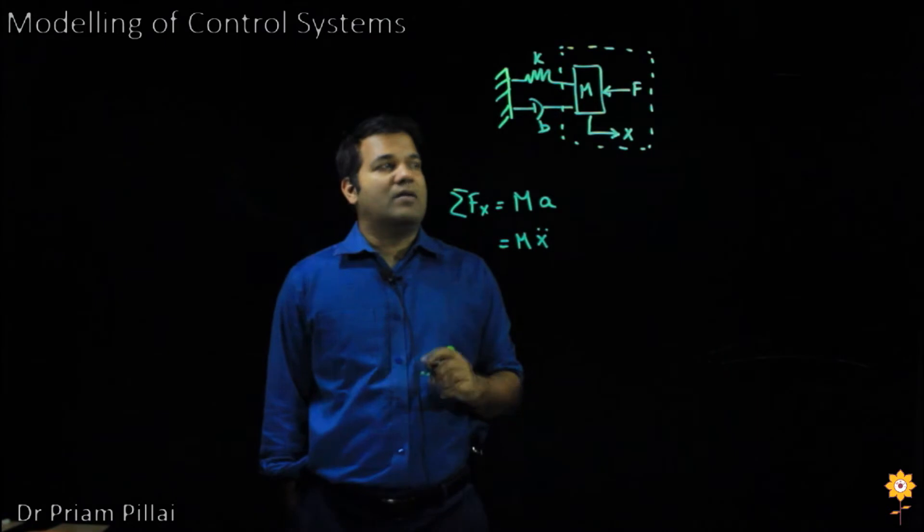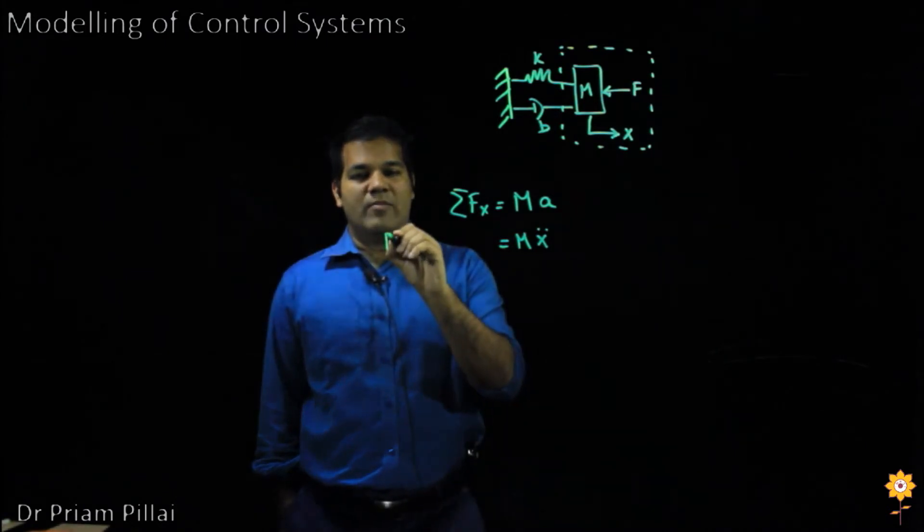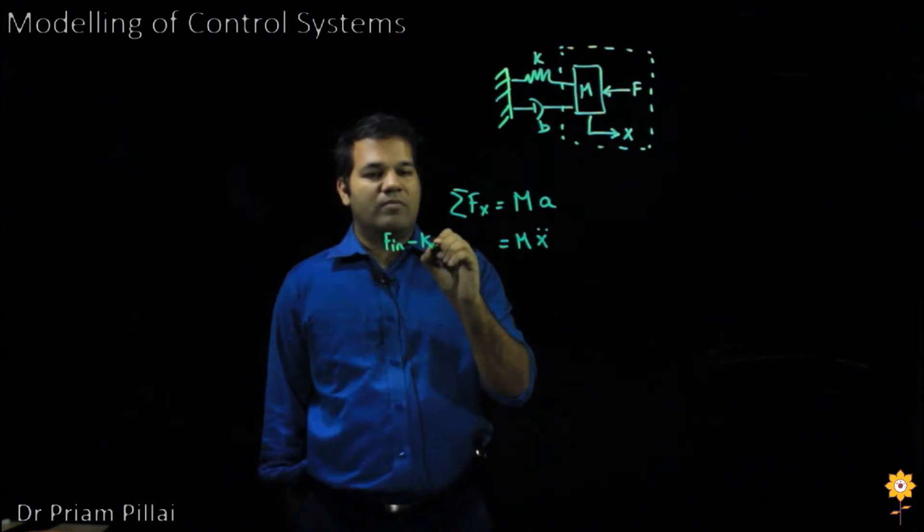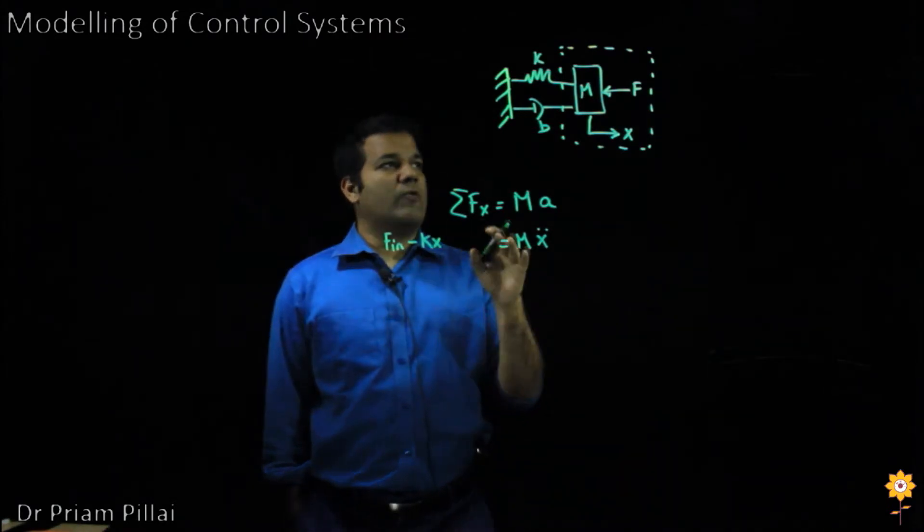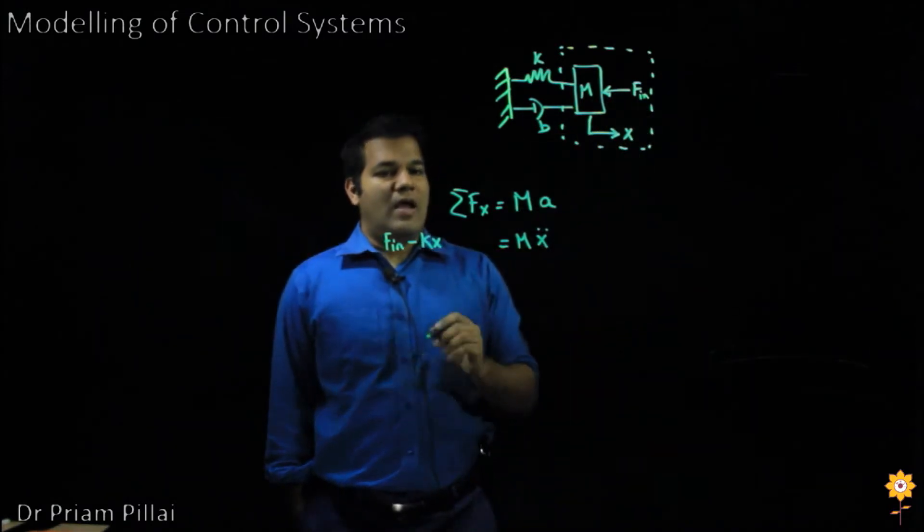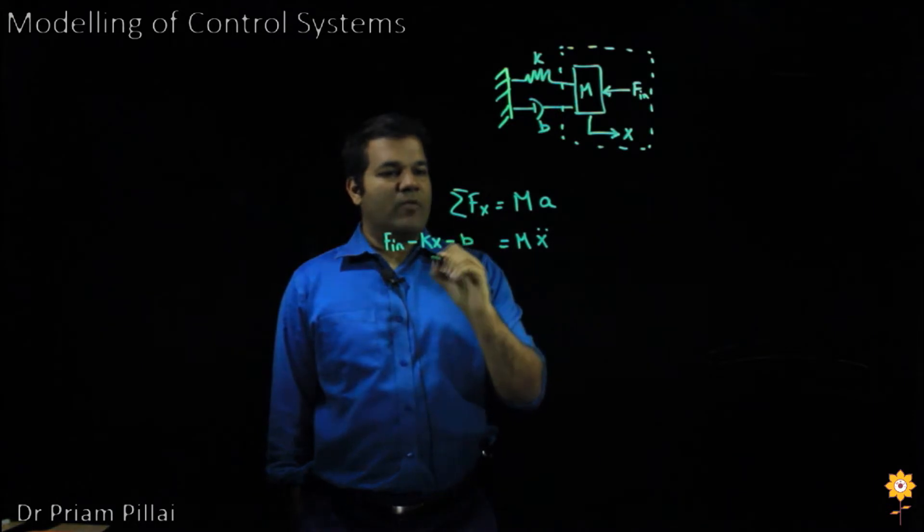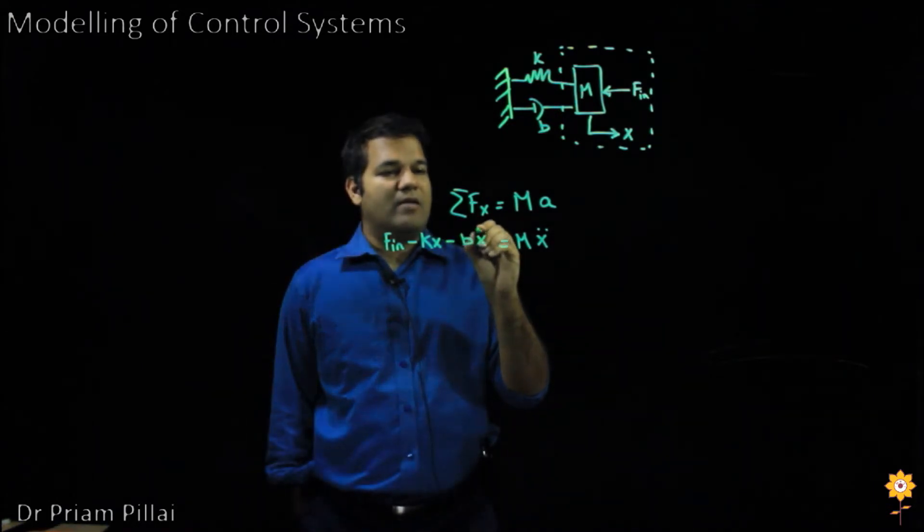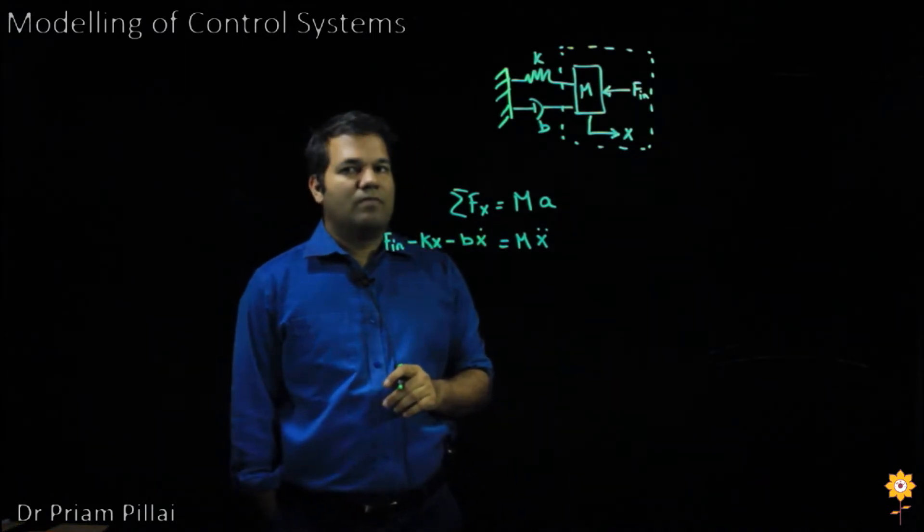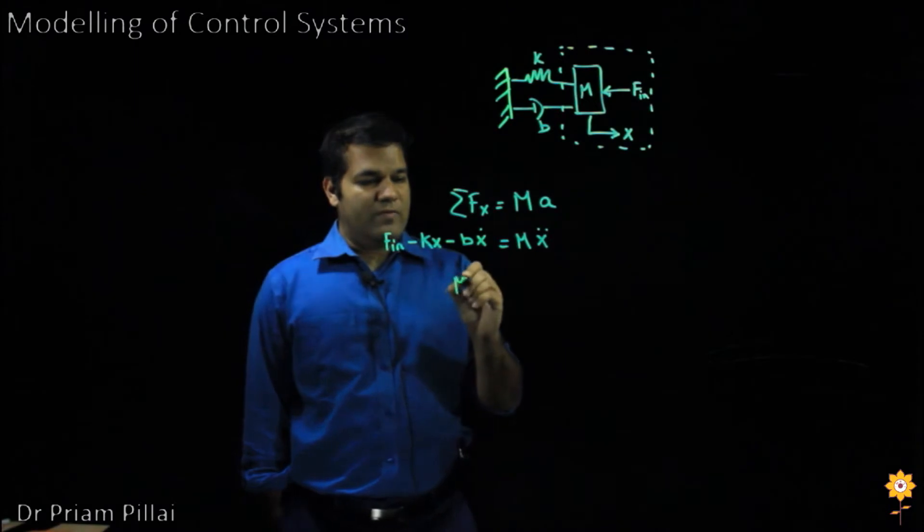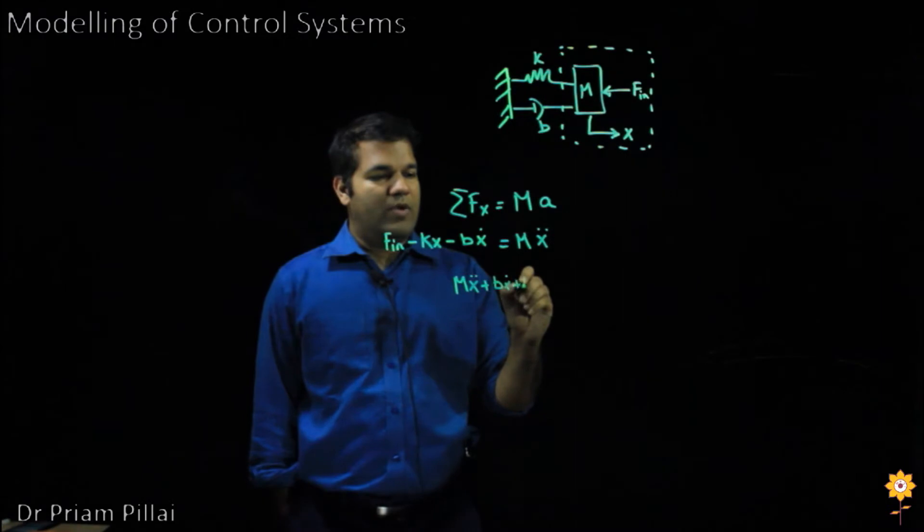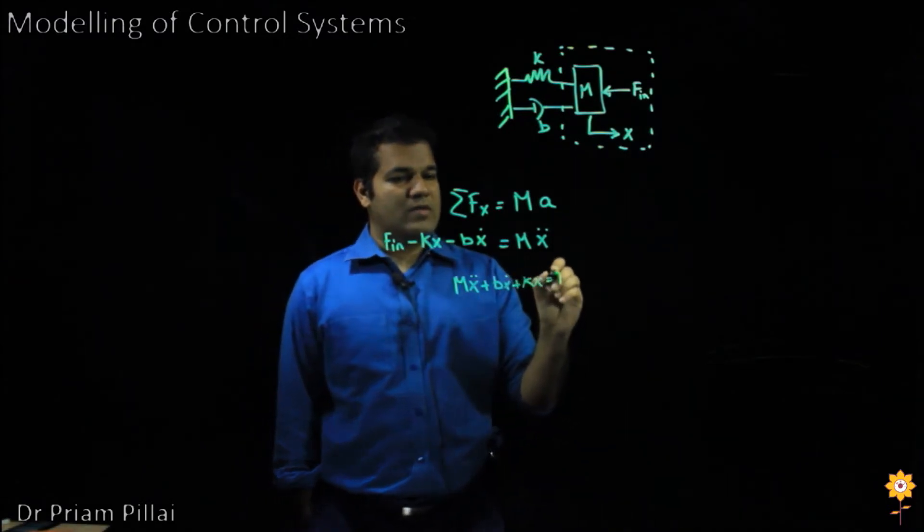The other forces acting on that mass will be given by the input force Fn, the spring force Kx, and it's minus because it would always oppose the input force Fn, and a damping force that will be given by the damping coefficient multiplied by the velocity which is x dot. Rearranging all of this, we get mx double dot plus bx dot plus kx equals Fn.